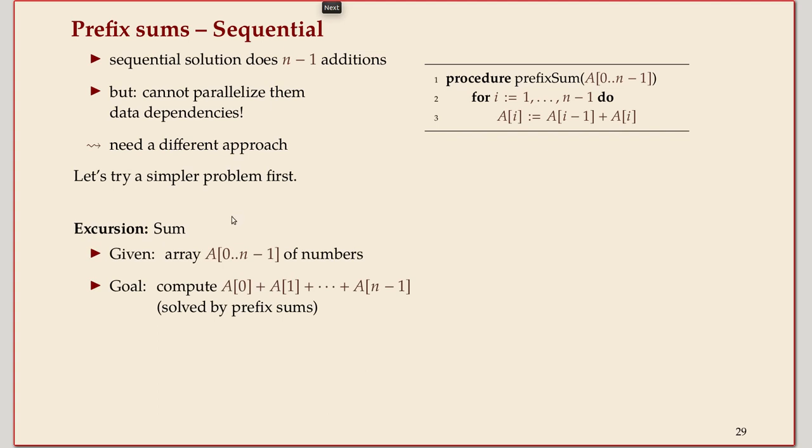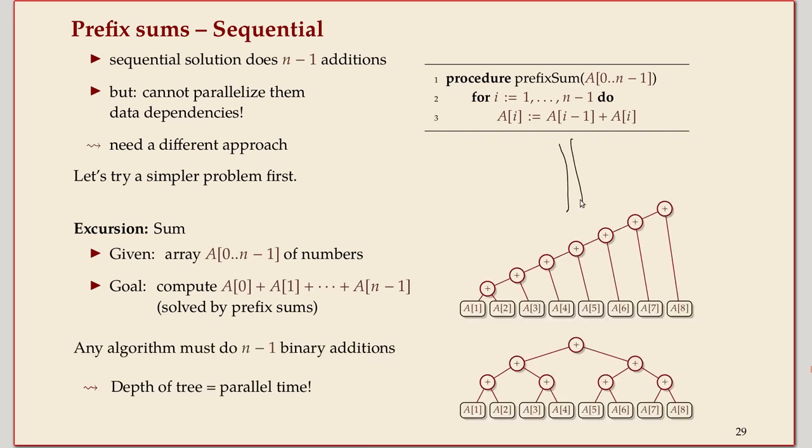It's hard to parallelize this specific code, because every step depends on the data from the previous step to be ready. So it seems there's nothing we can really speed up. So we need a slightly different approach. And let's simplify the problem even further. So forget about all those other partial sums. Let's just take the sum of the entire array, the last entry in the prefix sum array.